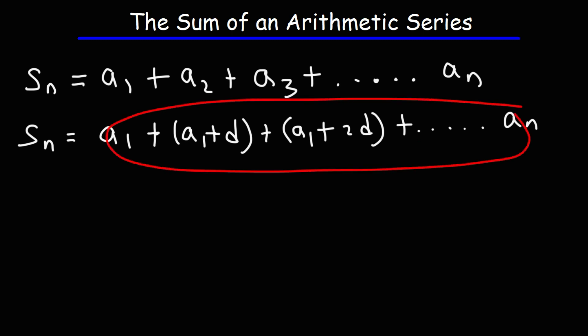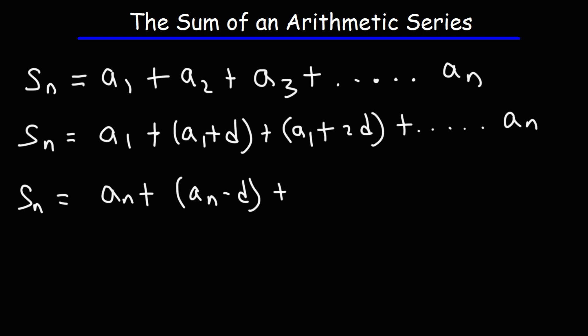So this expression is based on writing the sum from left to right. Now we're going to write the sum formula from right to left in the next line. So we're going to start with the last term first. So S sub n is also a sub n plus. Now the second to last term is going to be this, but minus one common difference. So it's a sub n minus d. Now the third from the last term is going to be a sub n minus 2d. And then that pattern will continue to repeat as we go all the way to the first term a sub 1.